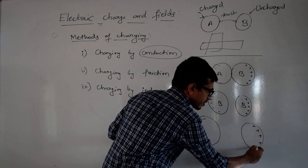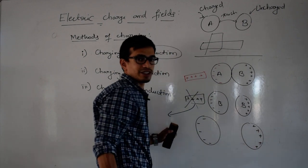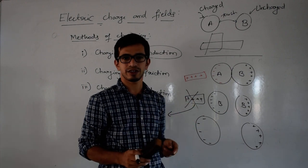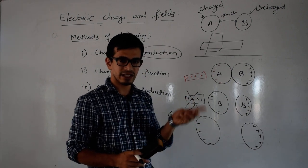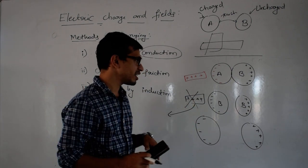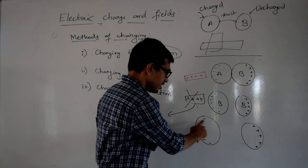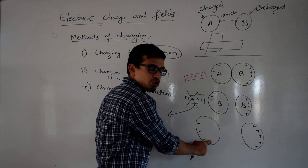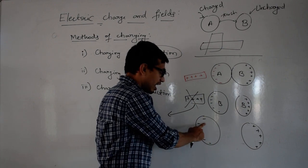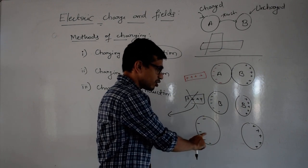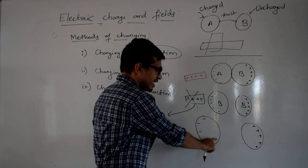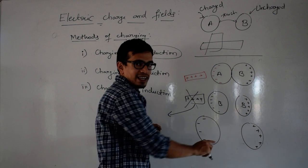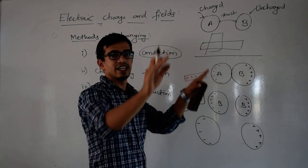So the negative charges are on one side and the positive charges are on the other side. The entire sphere has charge redistribution.